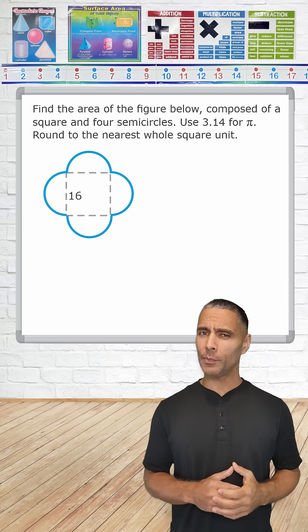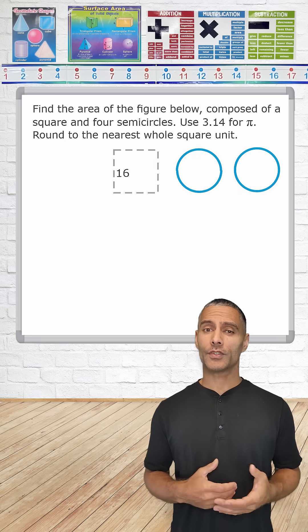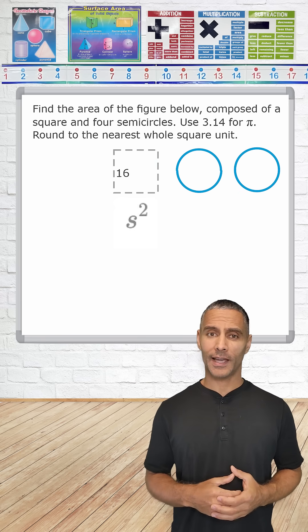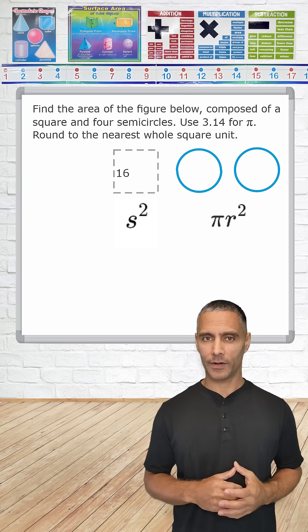What we're going to do is look at the shape as one square and a pair of congruent circles. To find the area of a square we simply square the length of one of its sides, and to find the area of a single circle we multiply pi by the radius of the circle squared.